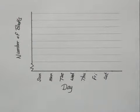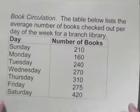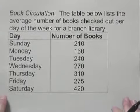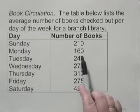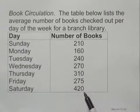Then we look back at the data to see how to scale this vertical axis. We check these numbers and see that on Monday, the fewest number of books were checked out, 160, and on Saturday, the most were checked out, 420.